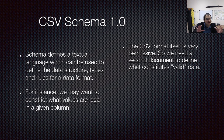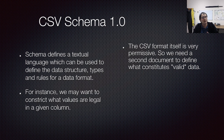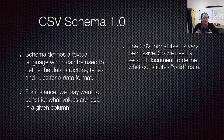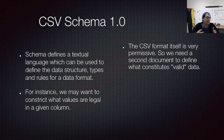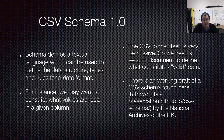The CSV file format itself is very permissive — you can stick a string field wherever you want, you don't have to have the same number of fields in every line, you can have some fields that are numbers sometimes and text other times. Schemas are ways to restrict it so that it only allows the things that you want it to allow. So data can be well-formed but gibberish, but if it conforms to a schema, then you can say it's been validated by the schema.